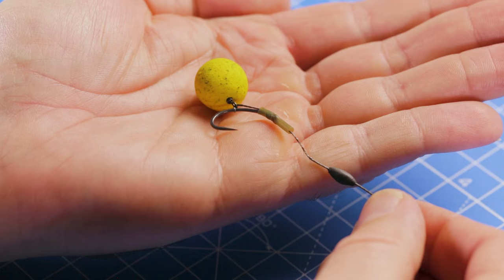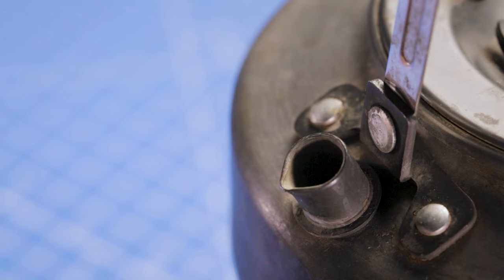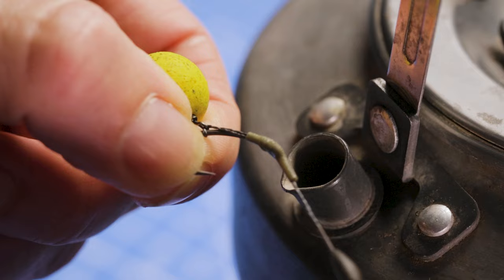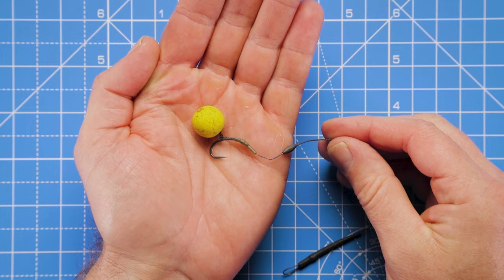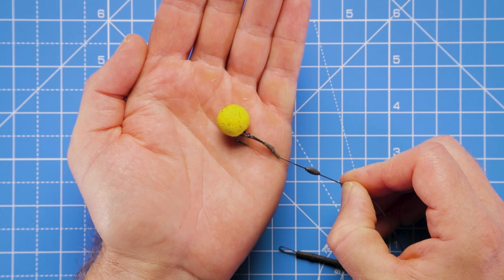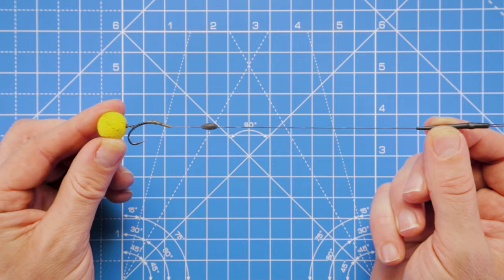There's only one more thing to do, and that's to carefully, without burning yourself or damaging the rig, shrink down the shrink tubing over the eye of the hook. And that's going to create an aggressive angle to help the hook turn and grab hold. And that's it, that's our slip D rig all tied up and ready to go.